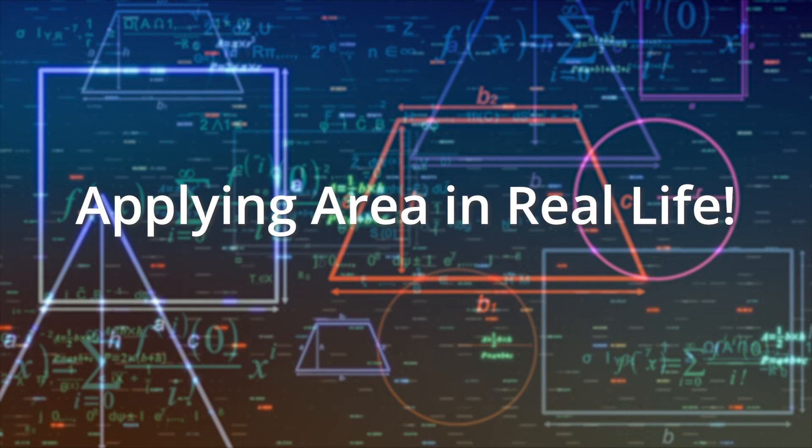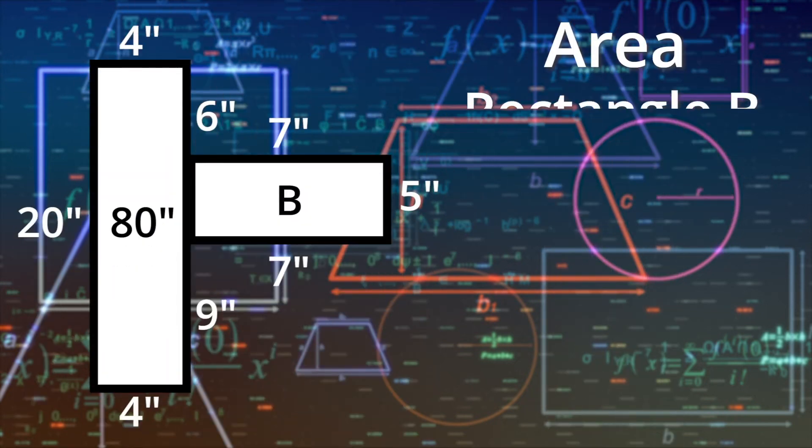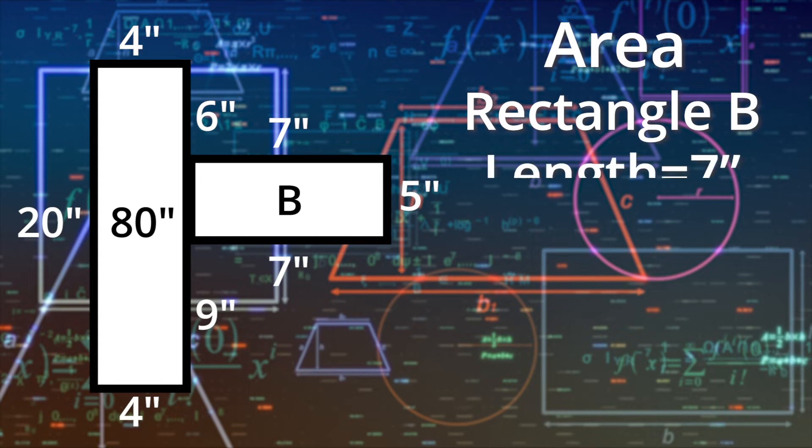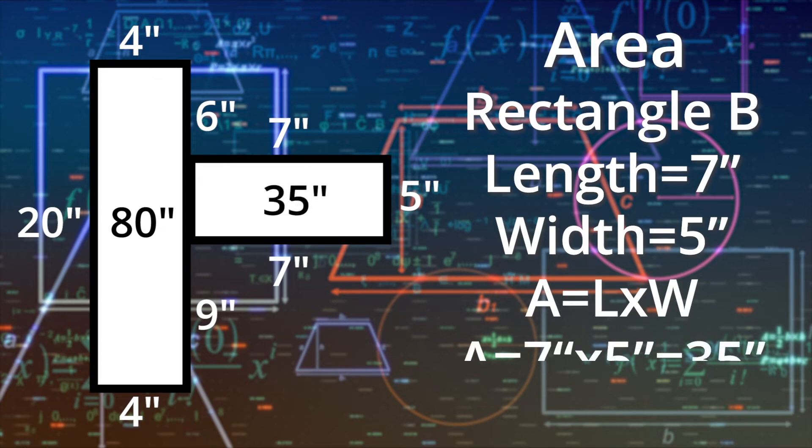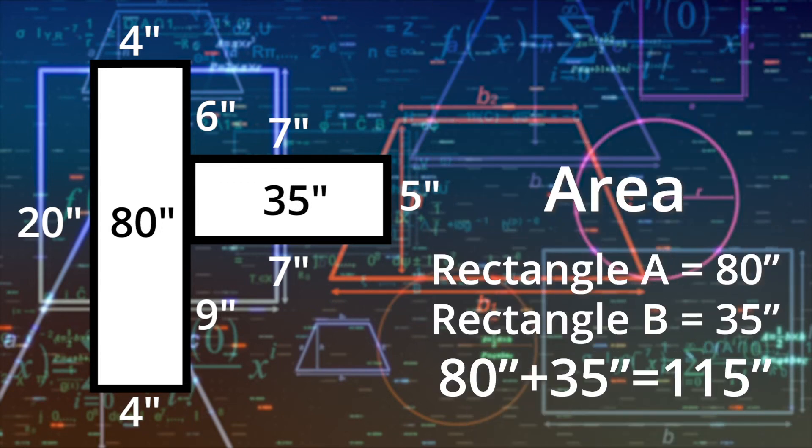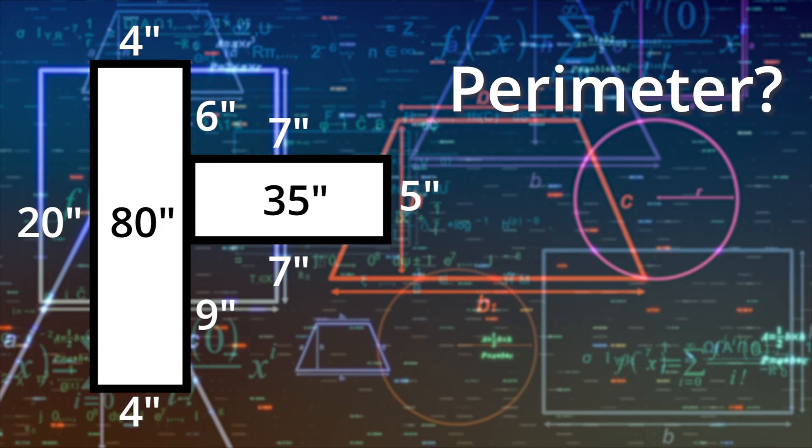We know that the length of rectangle B is 7 inches, and its width is 5 inches. Since the area is length times width, its area is 35 square inches. Now, if we add together rectangle A and rectangle B, the total area is 80 plus 35, or 115 square inches.